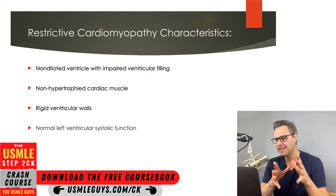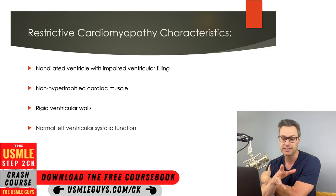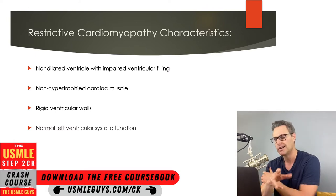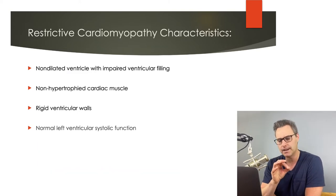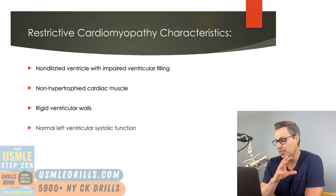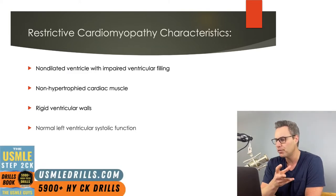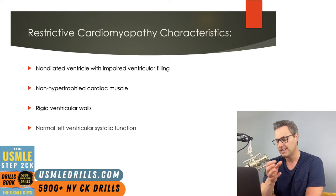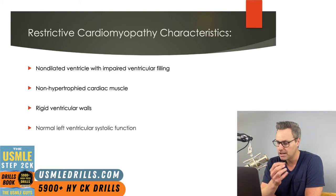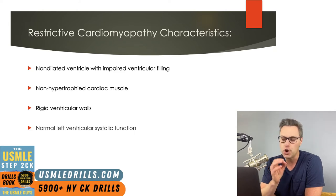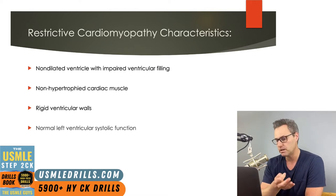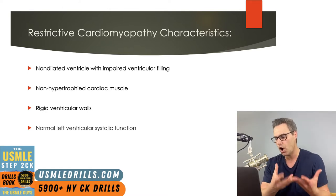Let's define exactly what separates restrictive cardiomyopathy from dilated and hypertrophic cardiomyopathy. A very large difference in this disease process is that the wall thickness in the ventricle is typically normal — it's not thin, it's not hypertrophied. It is possible for the wall thickness to be increased, but this would be due to an infiltrative disease or a storage disease, not cardiac muscle hypertrophy. An example would be amyloid deposits present in the heart tissue.